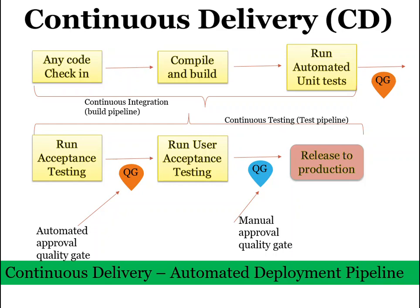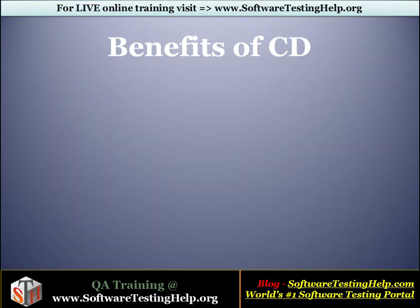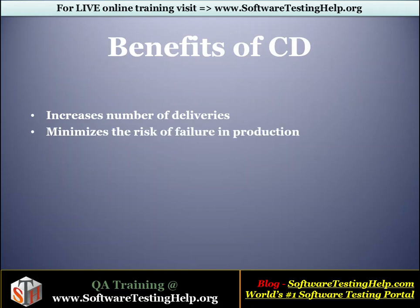This is the continuous delivery explained through the diagram. After understanding the continuous delivery approach, let us look at the benefits of continuous delivery. Continuous delivery is an automated deployment pipeline and hence obviously increases the number of deliveries. CD is a short cycle — as small as a few hours — so its very small and frequent deployments remove the higher risk of failure at production. Unless there is a mandatory requirement for human intervention, everything in the pipeline from code commit to code finish is automated, so a lot of manual work is reduced.